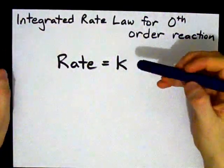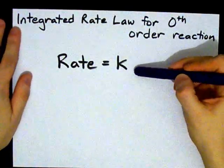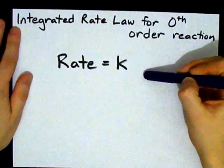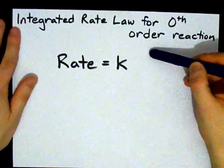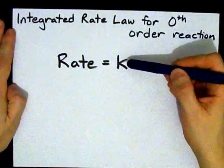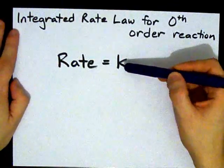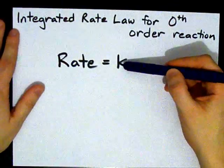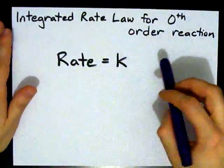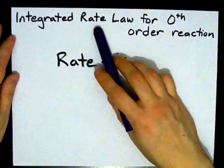A zero order reaction means that the exponent on the concentration in the rate law is zero, i.e. the rate does not depend on the concentration at all, it is a constant rate, and that amount that it is constant is k. In order to figure out the integrated rate law,